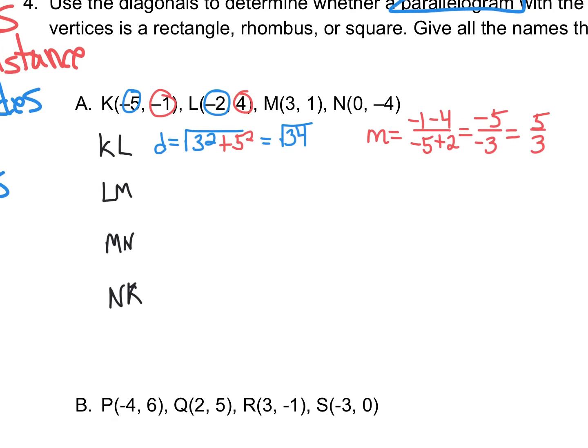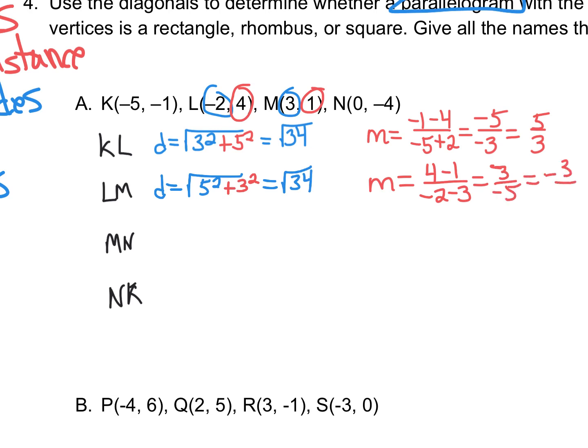So now let's do LM. Distance, the distance between these two X's is 5, and the distance between these two Y's is 3. Well, I already know that that's going to be the same distance. Those are the same numbers, aren't they? And that will be the same. Let's see about the slope. Y minus Y on top, X minus X on bottom. And I get positive 3 over negative 5, so negative 3 fifths. Well, those are opposite reciprocals, so there's a right angle right there.